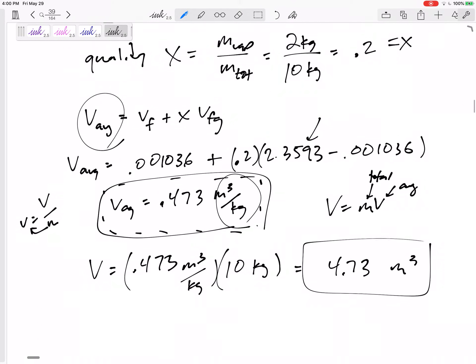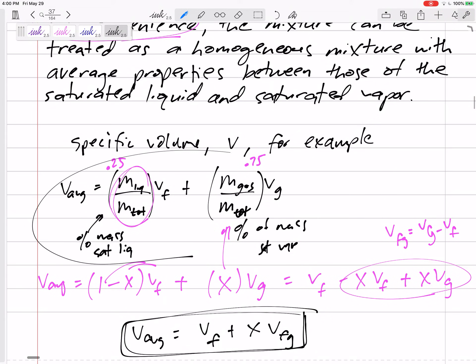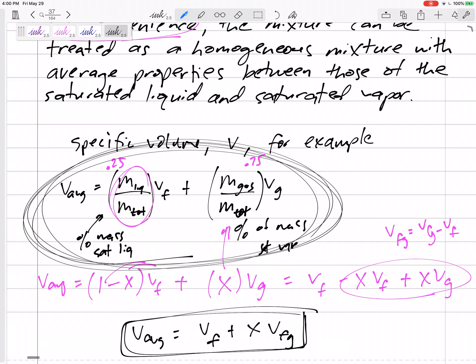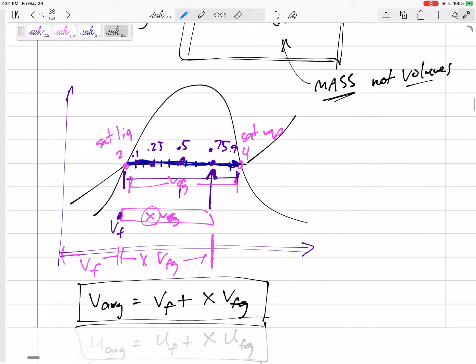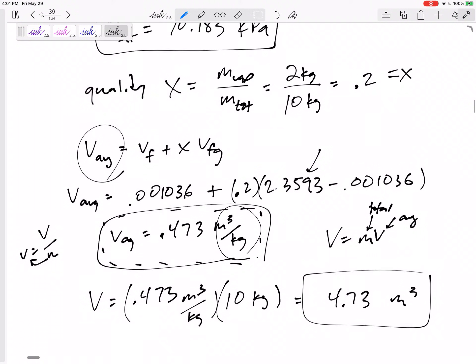And you could have done this a little bit longer route. See if you get the same answer. A little bit longer route if you took that, and if you said 0.8 times the VF value, 0.2 times the VG value, and add them up, you'd still get 0.473.